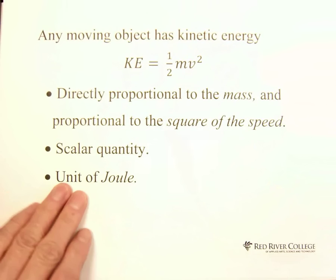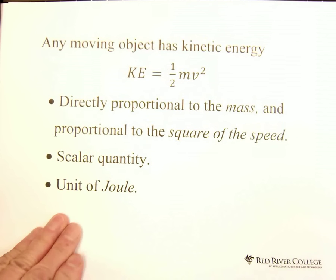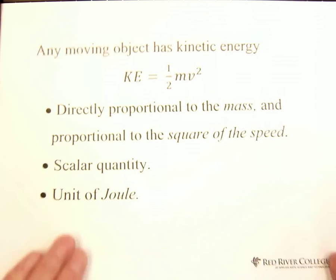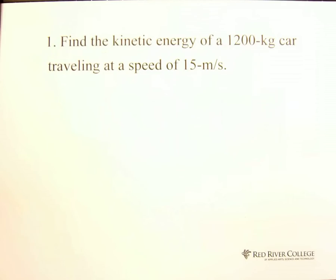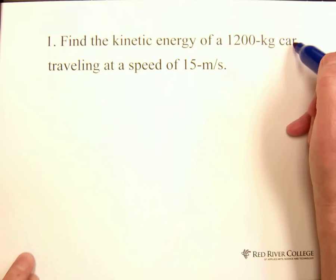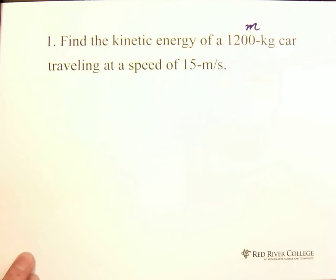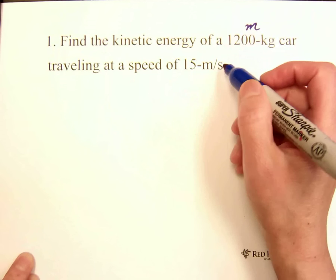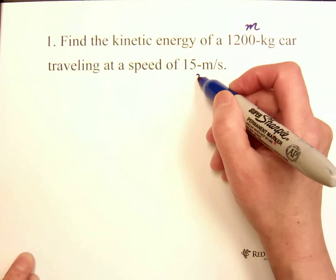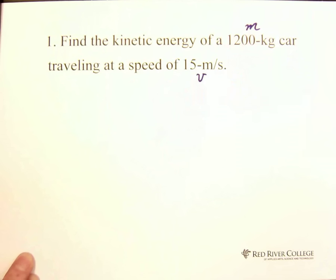Let's see an example. Find the kinetic energy of a 1200 kg car traveling at a speed of 15 m per second. So, 1200 kg is mass.